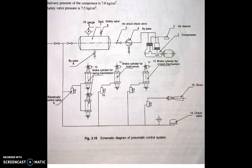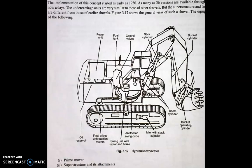After completing the electric shovel, the next is the hydraulic shovel. The implementation of this concept started as early as 1950, and as many as 36 versions are available throughout the world. The undercarriage unit is very similar to those of other shovels, but the superstructure and front attachment are different. The hydraulic shovel consists of: number one, prime mover; number two, superstructure and front attachment; number three, hydraulic mechanism; and number four, undercarriage unit.